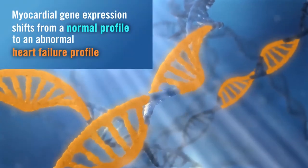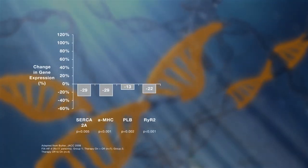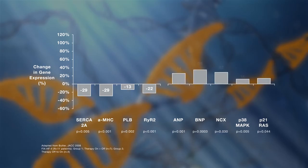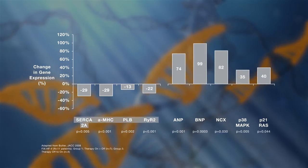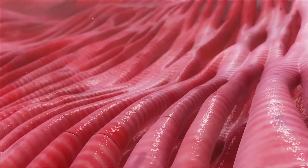When this occurs, some genes become abnormally down-regulated and others are abnormally up-regulated. Some of the proteins associated with these genes are essential to normal calcium cycling and myofilament function, which collectively determine myocardial contractility.